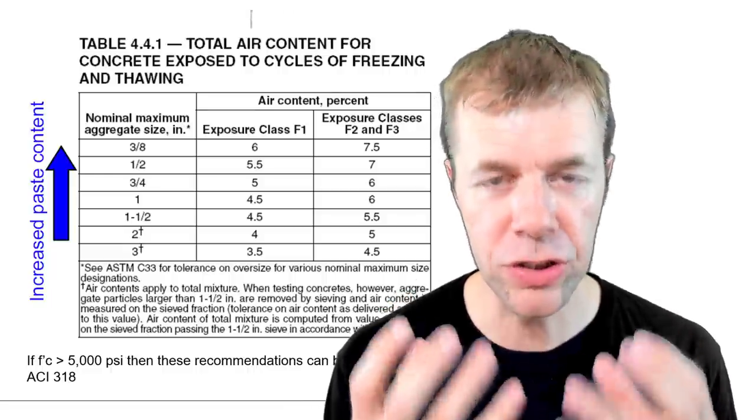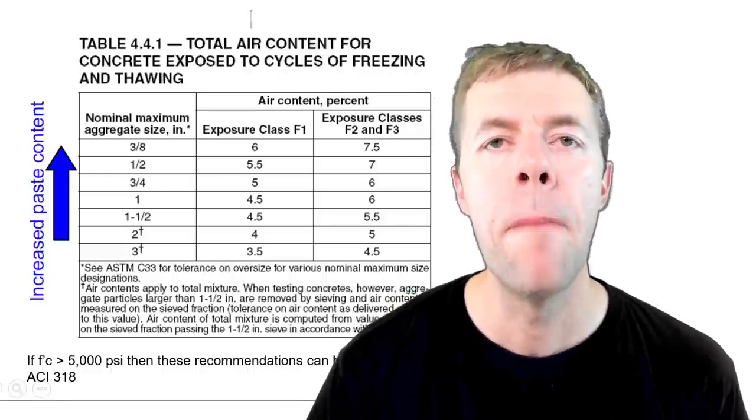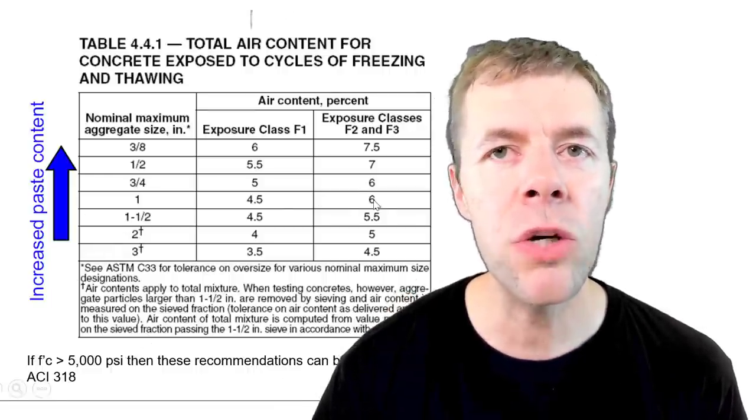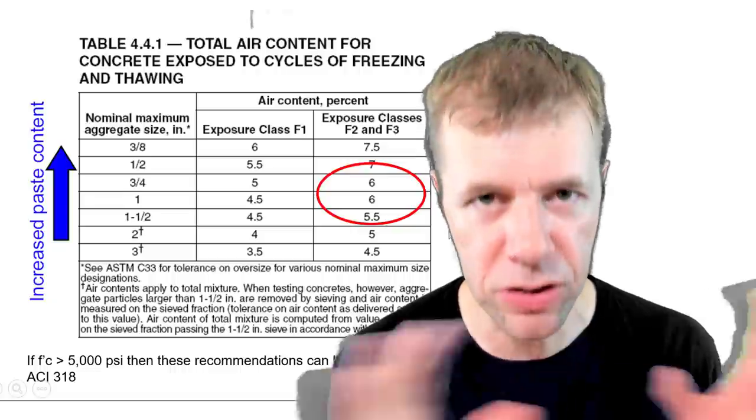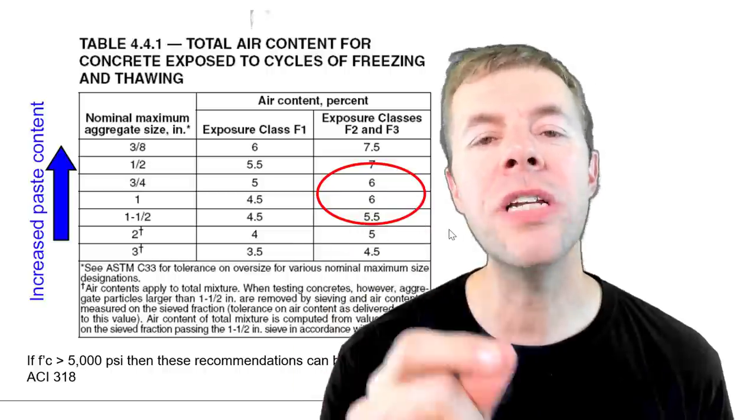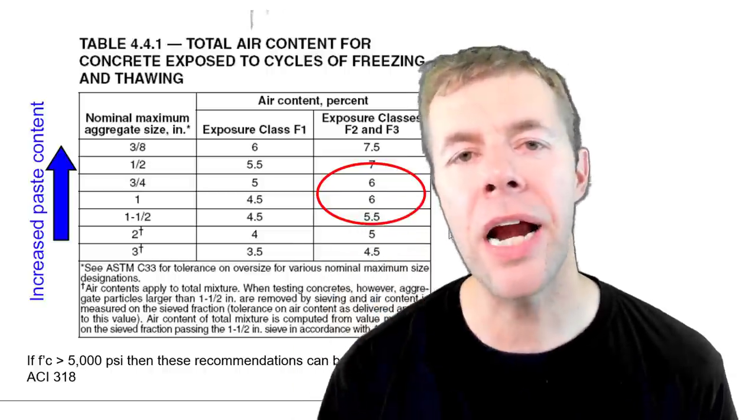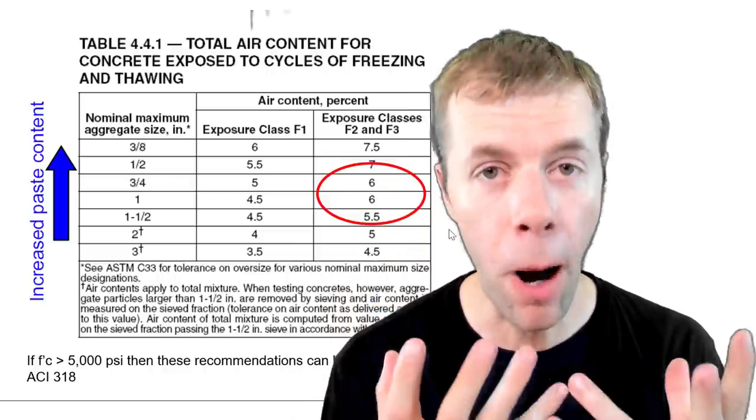Typically specifications look something like this: based on the aggregate size they tell you a certain volume of air. Most people make this even simpler, they just say you need six percent air in your concrete. Do you know where that's from?